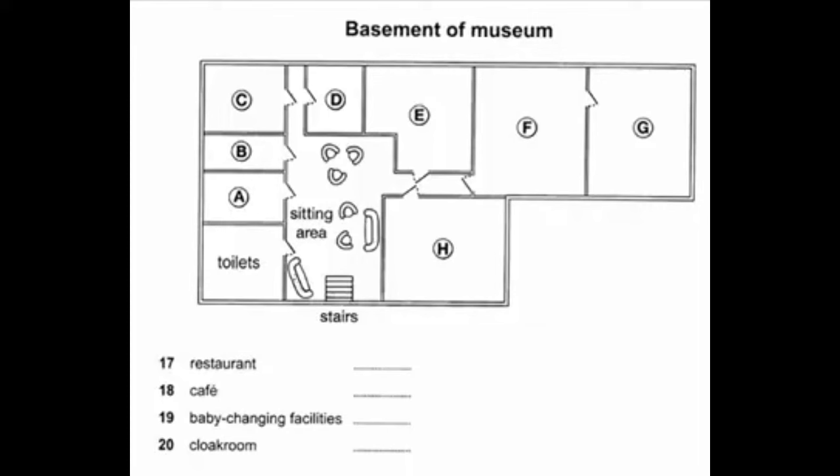And talking about children, there are baby-changing facilities downstairs. Cross the sitting area, continue straight ahead along the corridor on the left, and you and your baby will find the facilities on the left-hand side.